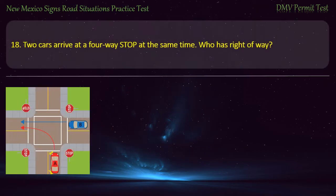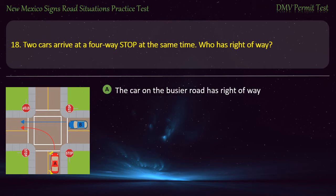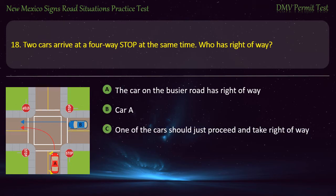Question 18. Two cars arrive at a four-way stop at the same time. Who has right-of-way? Options: The car on the busier road; Car A; one of the cars should just proceed and take right-of-way; or Car B. Answer: Car B.